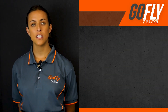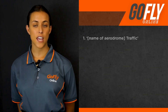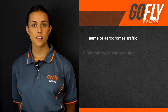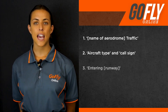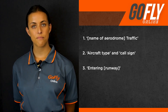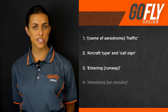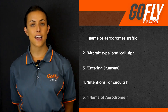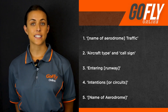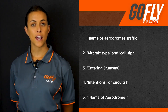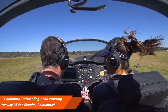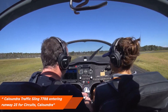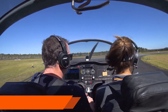Suggested calls when entering the active runway include the name of the aerodrome, followed by traffic, aircraft type and call sign, entering followed by the runway, intentions or circuits, and the name of the aerodrome. An example of this would be: Caloundra traffic, Sling 7788, entering runway 23 for circuits, Caloundra.